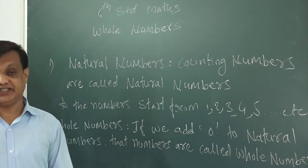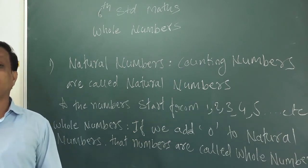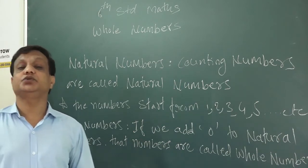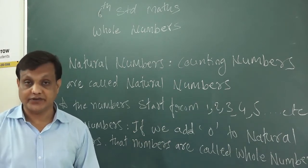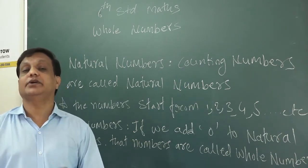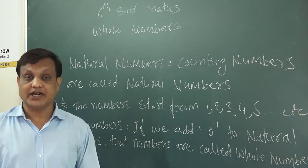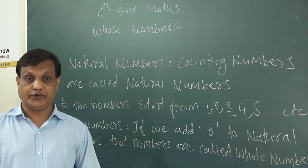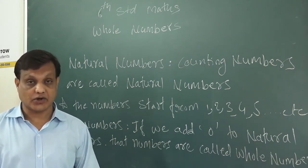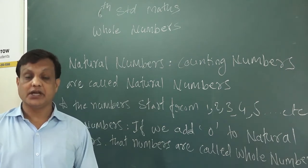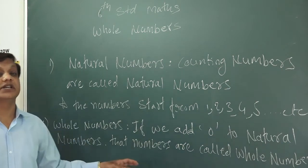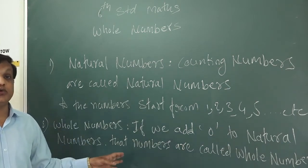This is the definition. We need a definition to better understand what is natural number and what is whole number. Natural numbers start from 1, 2, 3, 4, etc. and whole numbers start from 0, 1, 2, 3, 4, etc.